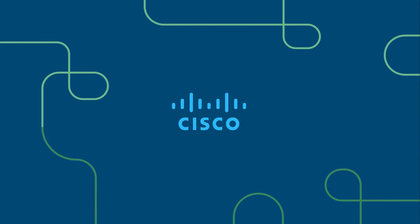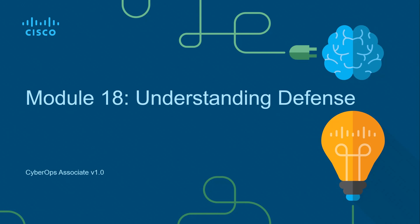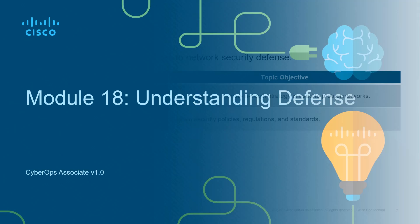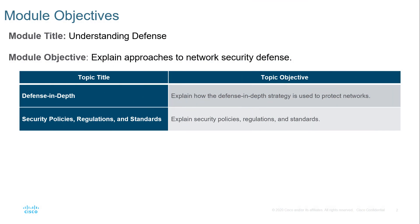We're focusing on the Cisco cybersecurity operations fundamentals course, known as CBROPS. In module 18, understanding the defense, we're looking at two main sections: defense in depth, and security policies, regulations, and standards. The security policy is actually building a triad of policies, procedures, and guidelines — plus more — which is the paperwork aspect, or administrative-based controls.